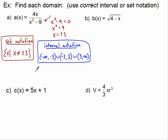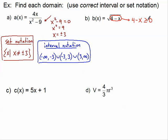The second example deals with an even radicand — it's a square root with an index of two. x cannot be a number that makes this radicand negative. The square root of zero is okay, so x being four is fine (four minus four is zero). But x being five gives us four minus five, which is negative, and the square root of a negative is imaginary. To find valid x values, force the radicand to be greater than or equal to zero and solve.